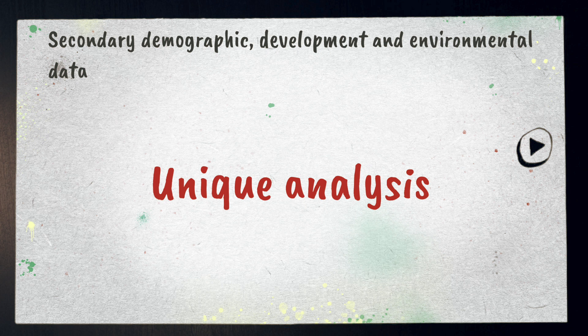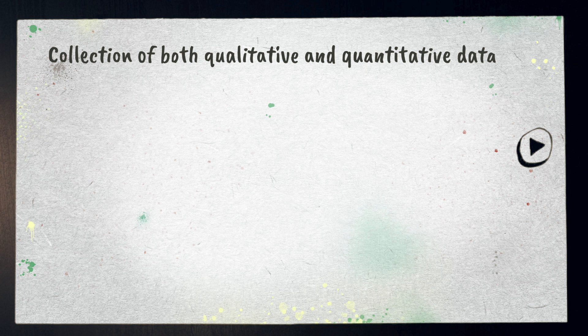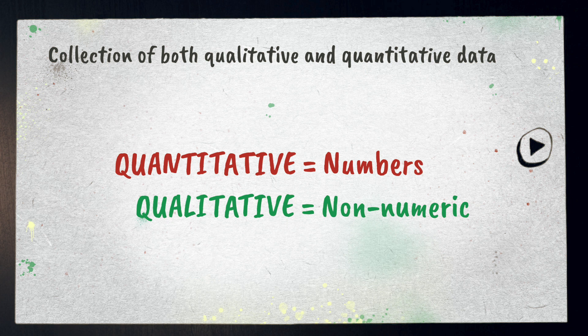The last one I'll cover is the collection of qualitative and quantitative data. Basically quantitative data involves using numbers while qualitative data means non-numeric. We've discussed a lot of quantitative data examples but don't overlook the qualitative information you can also collect.